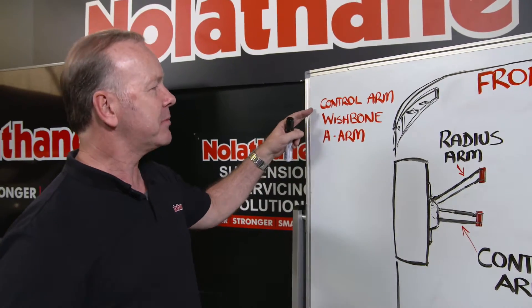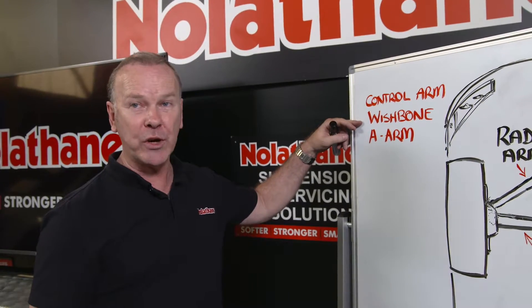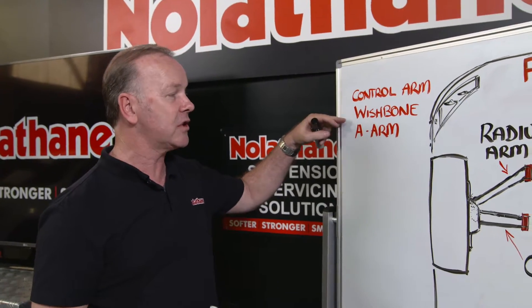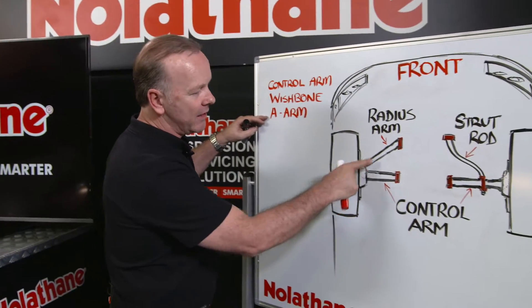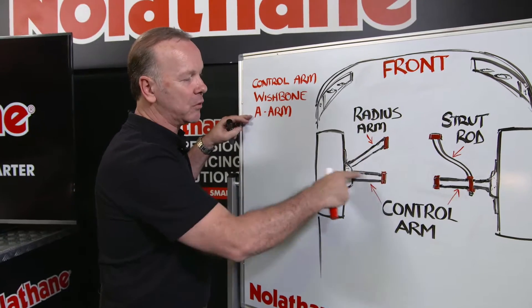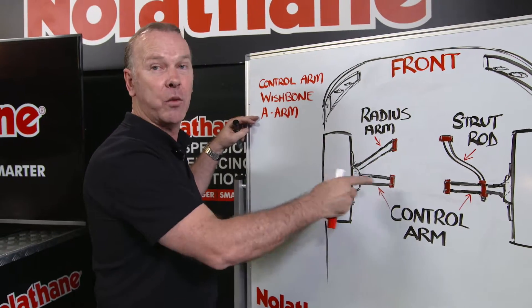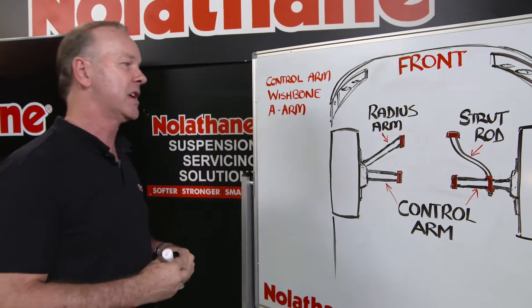That's got a couple of names. The control arm has been called the wishbone over the years, or the A-arm, because often that was joined in one piece and it was kind of like a wishbone or an A-arm — pretty obvious.